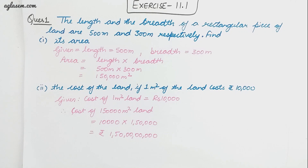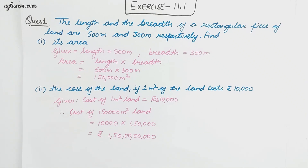Hello, welcome to our channel Agla Sam Schools. In this video we will be covering Exercise 1 of Chapter 11, Perimeter and Area of Class 7th in CBRT textbook. This chapter is basically about perimeter and areas of plane figures including squares and rectangles. Let us begin with Exercise 11.1.